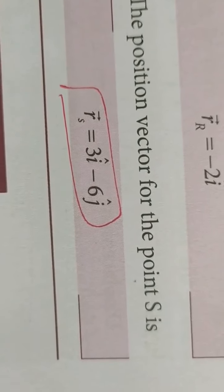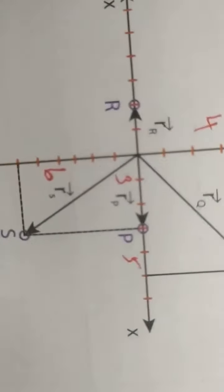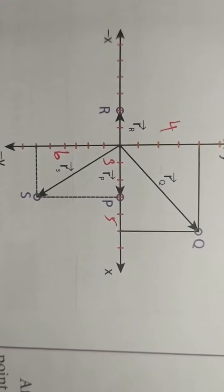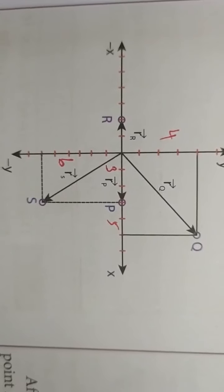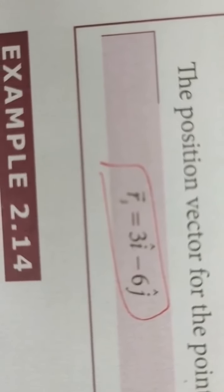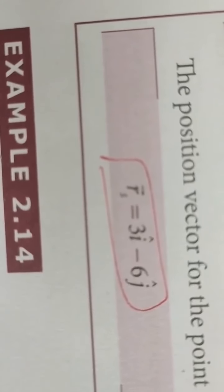For point S, you project the line on the x-axis and y-axis. Point S has 3 divisions on the x-axis and 6 divisions on the y-axis, but in the reverse direction — that is, the negative direction. So rS vector equals 3 i-cap minus 6 j-cap.